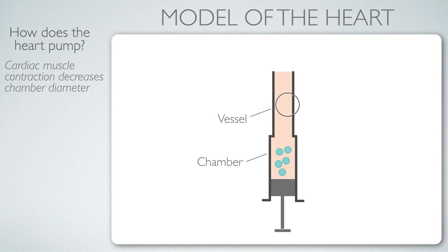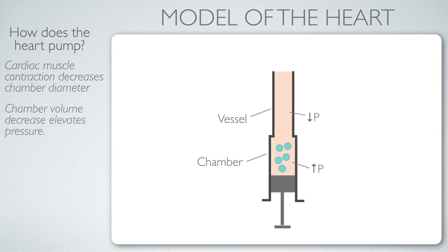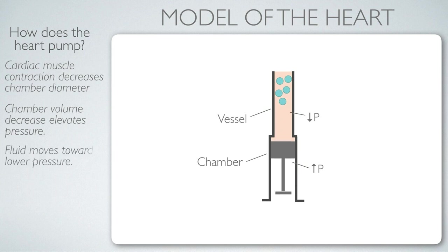As we push the plunger, the chamber volume decreases and pressure inside the chamber rises compared to the vessel. Blood flows from the chamber to the vessel because of a pressure gradient — a spatial difference in pressure. The blood flows upward in our schematic due to that pressure difference. Fluid moves toward lower pressure.